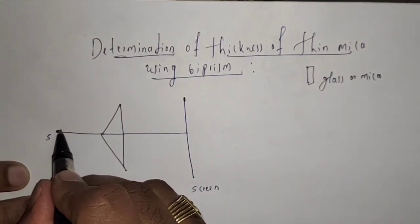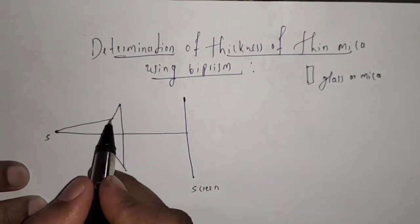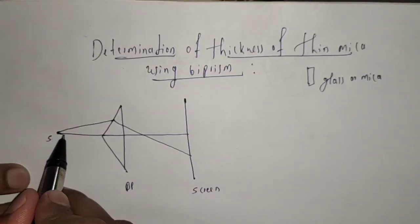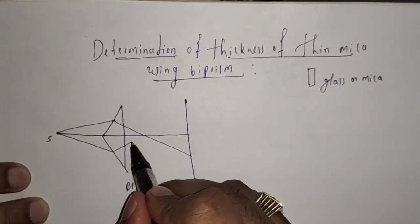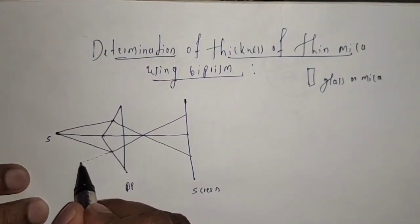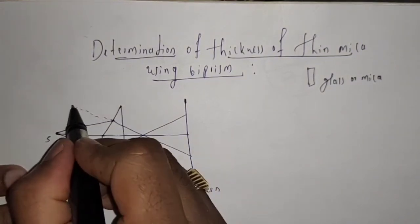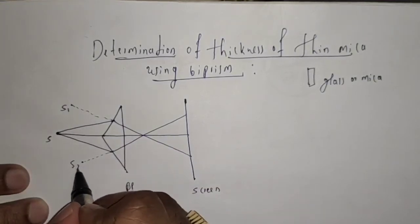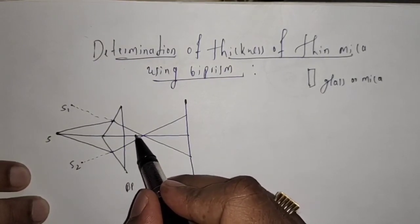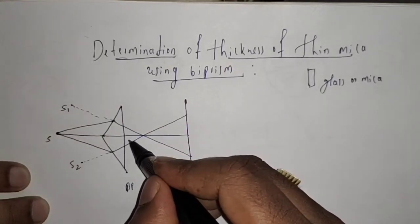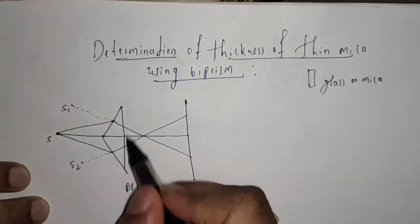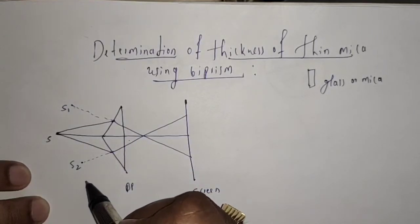Light waves from the source incident on the upper portion refract and fall on the screen. Similarly, light from the source incident on the lower portion refracts and falls on the screen. If we extend these lines, we get S1 and S2 — the virtual sources. Observing from one side it seems the light comes from S1, and from the other side it seems to come from S2. So using a single source and biprism, we have created two virtual sources.